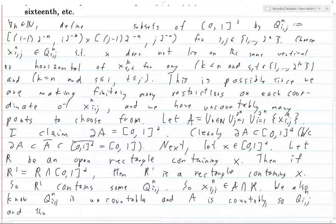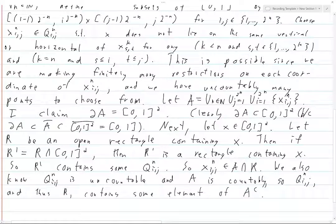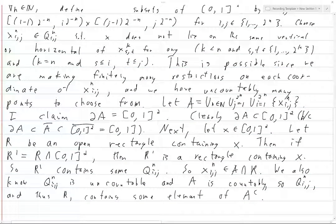So Q_{i,j}^n minus A is nonempty, and thus R contains some element of A complement.